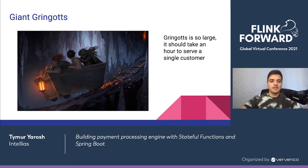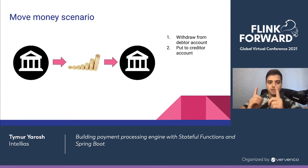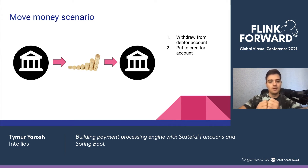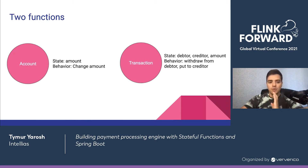They decided to start from a proof of concept with a single operation: moving money between internal accounts. A debtor is the one who sends money and the creditor is the one who receives — in other words, debtor is the sender and creditor is the receiver. The MoveMoney operation consists of two steps: withdrawing money from the debtor account and putting money into the creditor account. So the first question is how to design our functions.